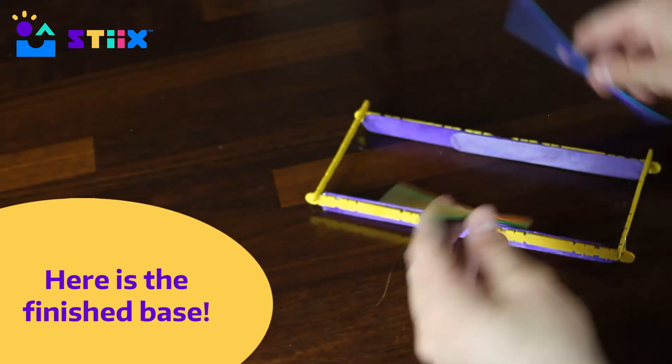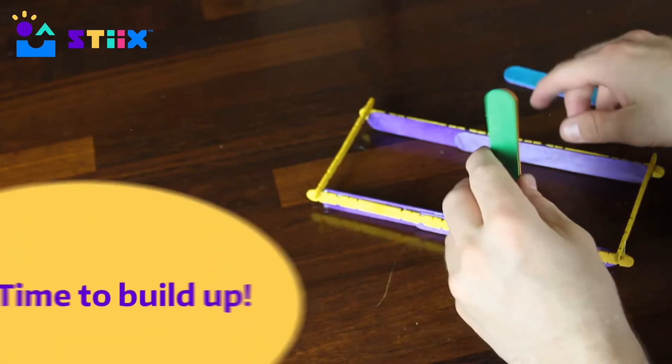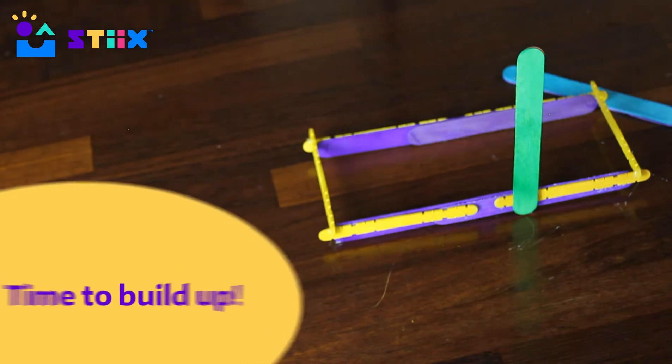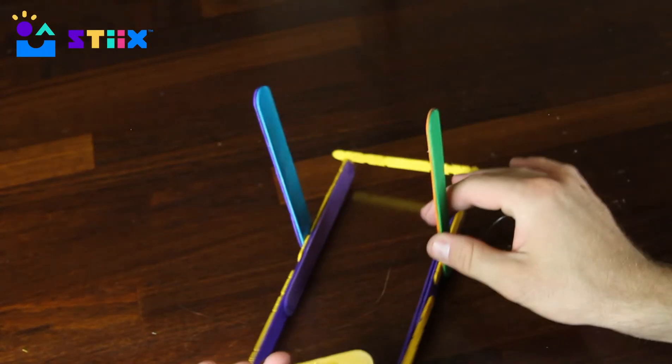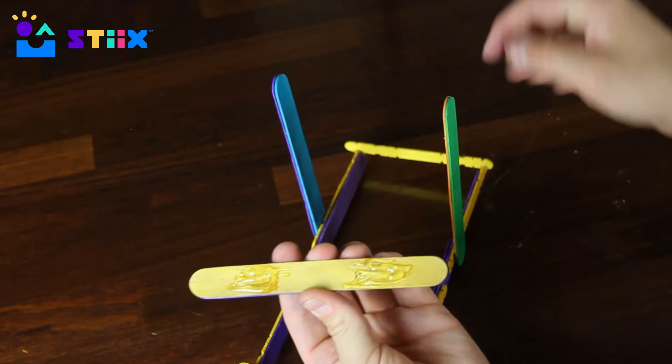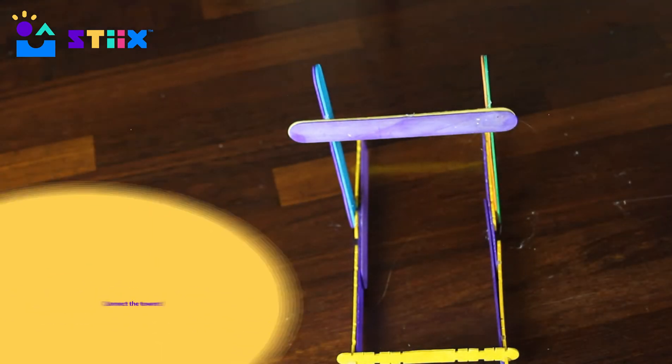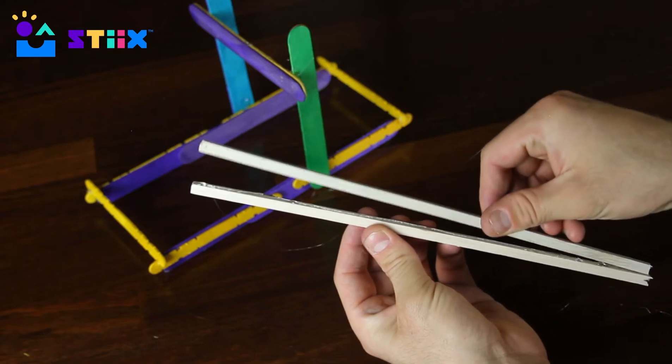Once the base is all done, we need to build our catapult up so we have something to attach the lever to. Keep in mind that we're going to be putting this catapult under a little bit of stress, so if you see any opportunities to make it stronger, we recommend you do that.